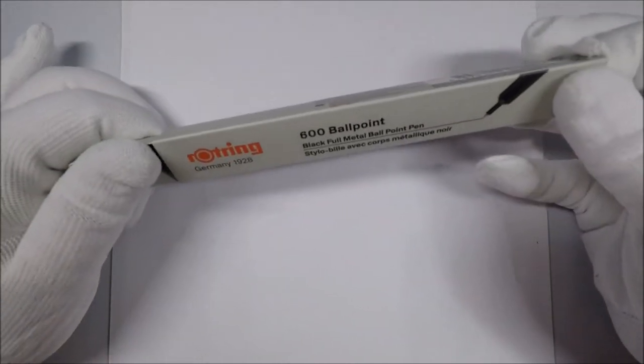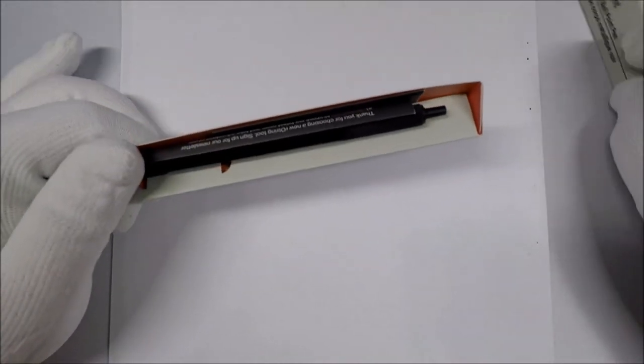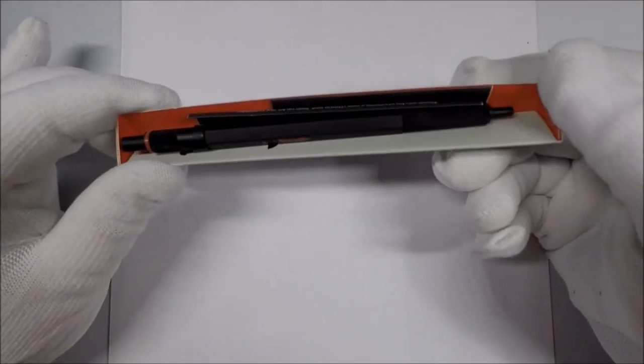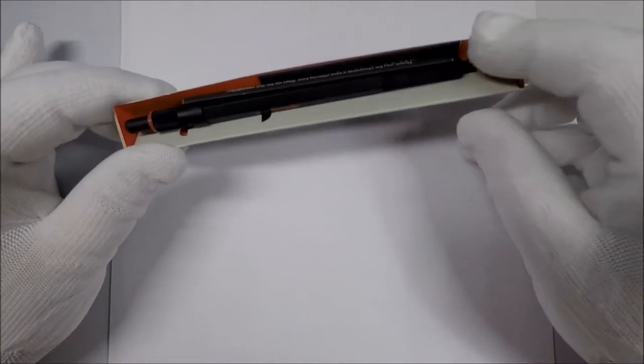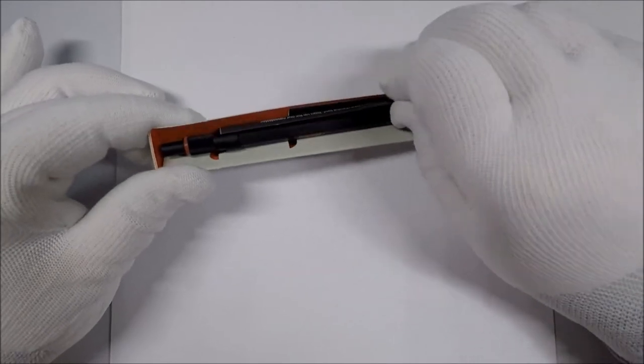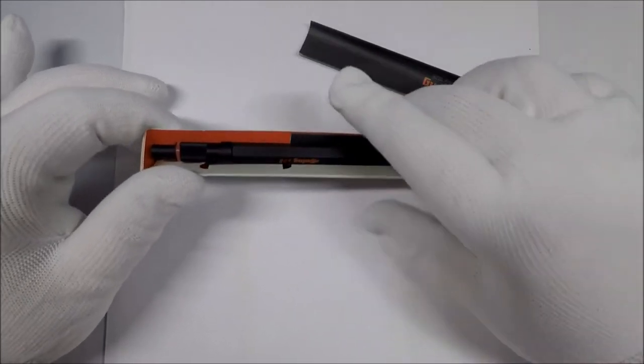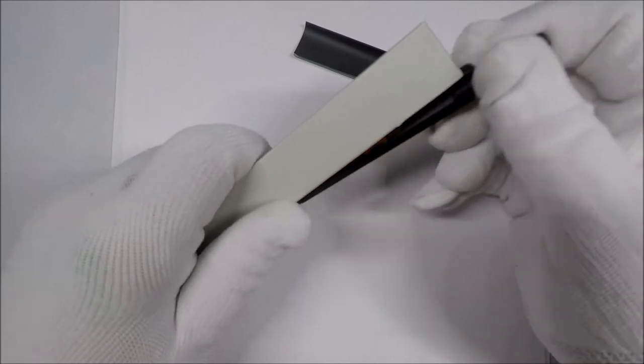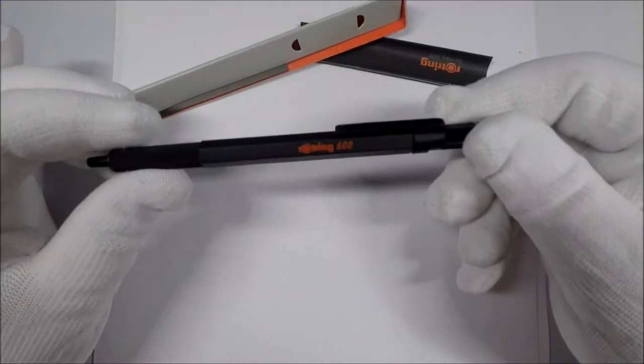So I figured at 30 or 35 bucks, I would take a look at it. I'm kind of curious what the difference is, because according to the packaging, this is a Rotring 600.